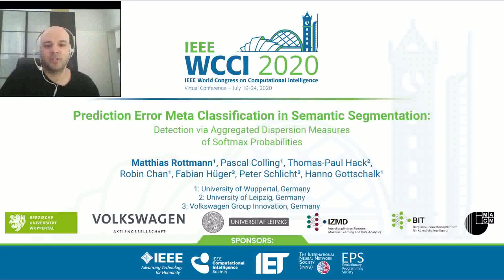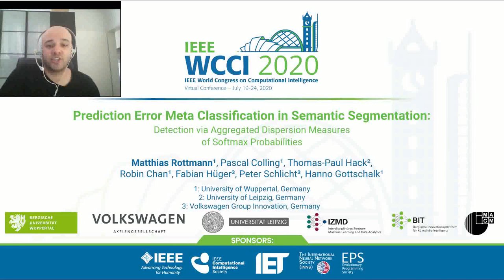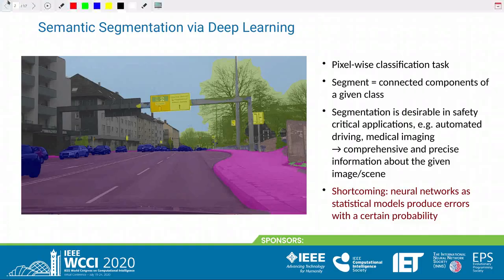Hello dear audience, thank you for watching this presentation. My name is Matthias Rottmann and this is joint work with people from University of Wuppertal, Volkswagen Group Innovation, and University of Leipzig. The title of this work is Prediction Error Metaclassification in Semantic Segmentation Detection via Aggregated Dispersion Measures of Softmax Probabilities, and in a minute it will become clearer what all this means.